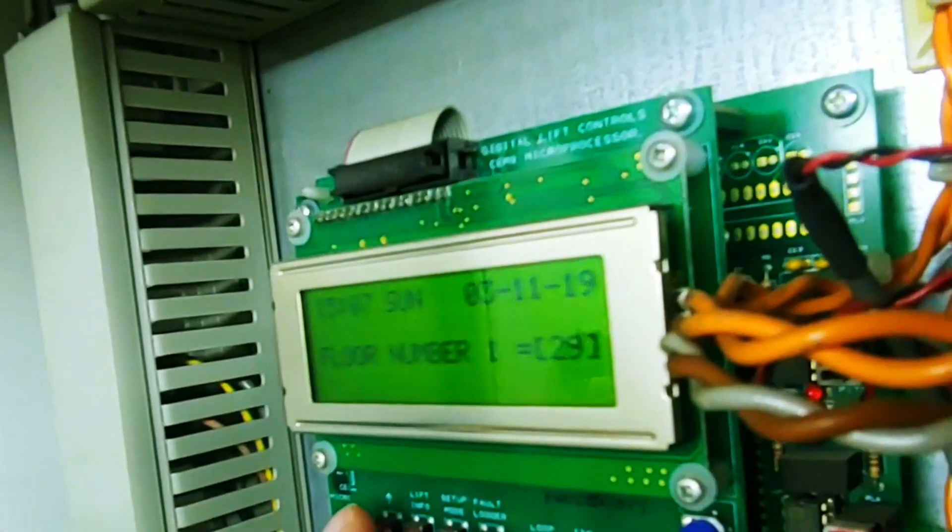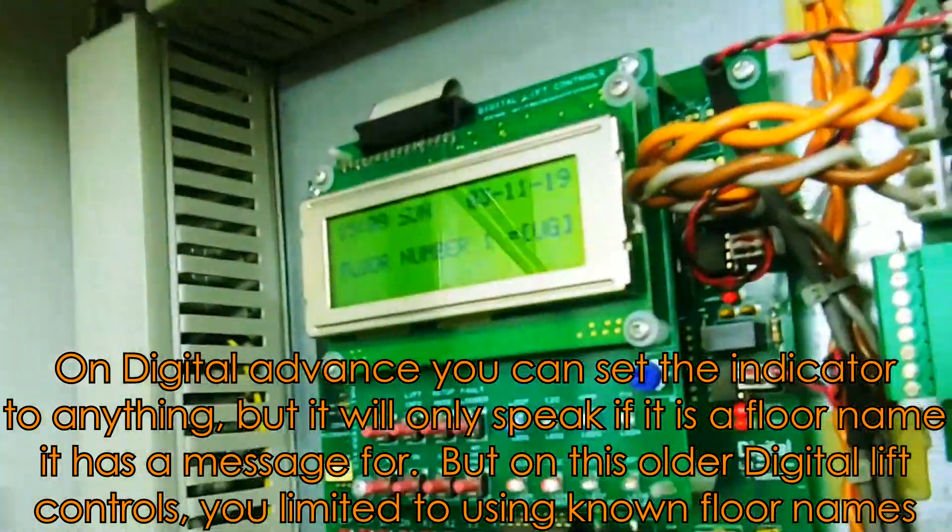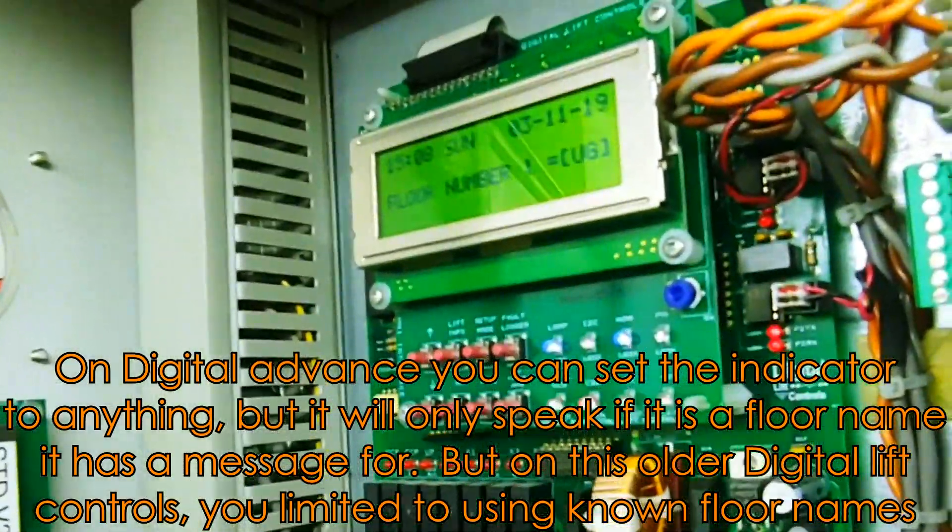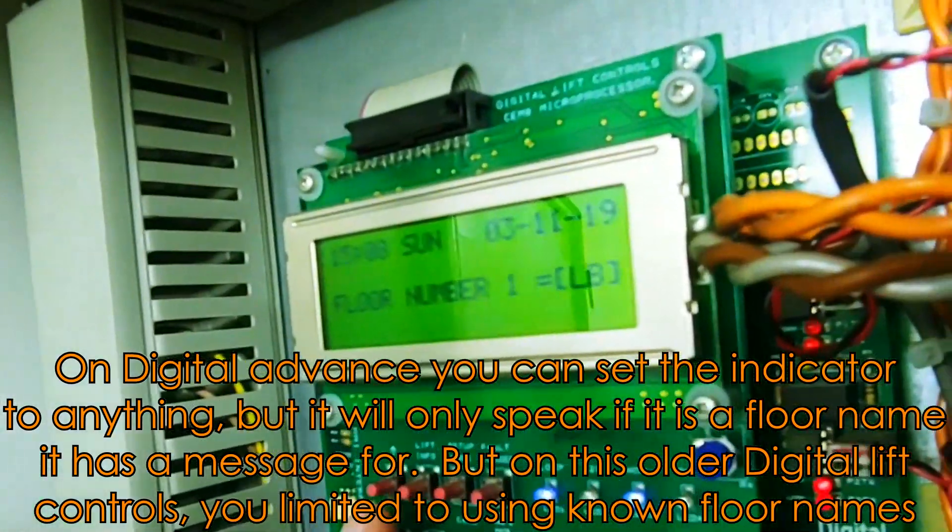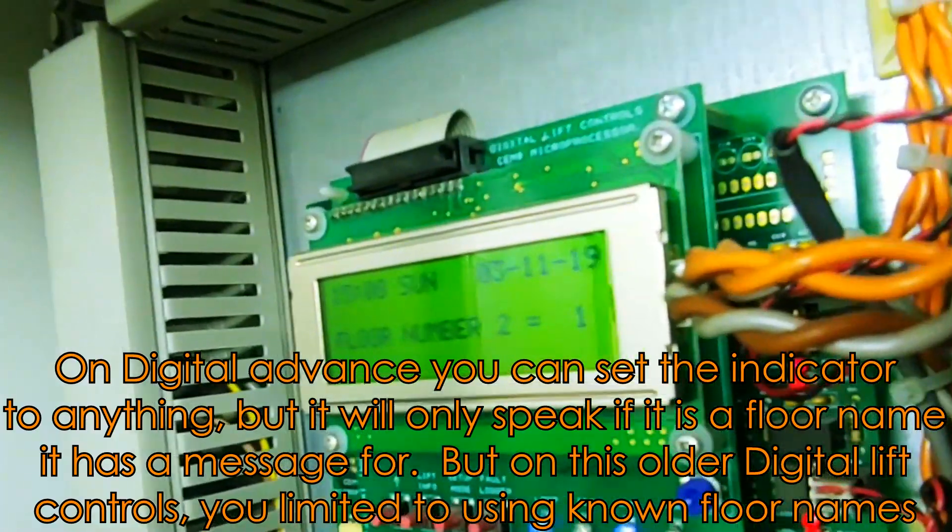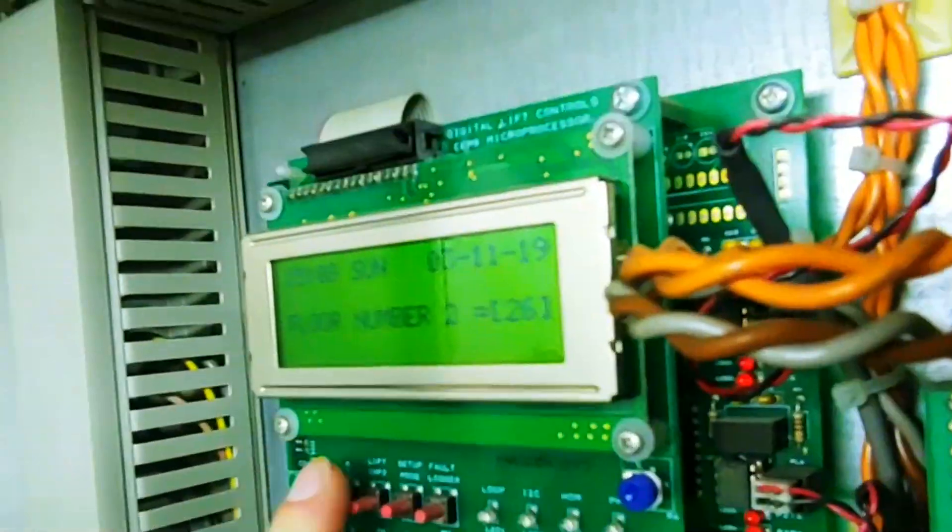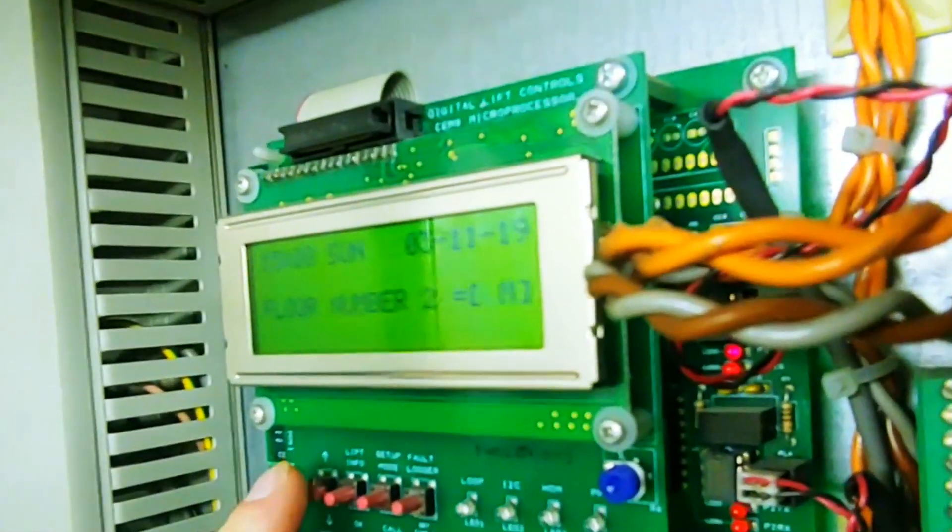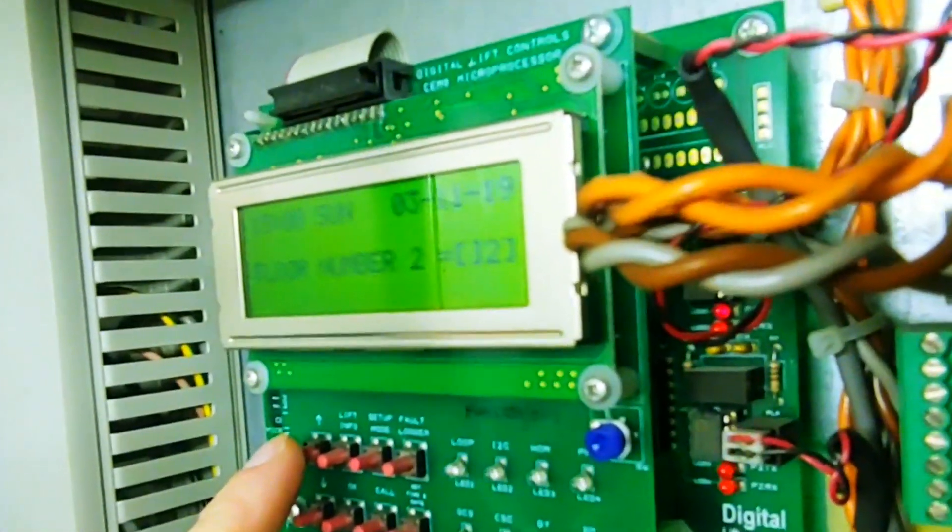An interesting thing is on Digital Advanced, the logic that superseded this logic, you can set the indicator to anything you like, but the voice will only speak if you set it to something it's got a message for. If you set it to ZZ, it'll say nothing. But if you set it to UG, it'll be upper ground. On this older digital lift controls logic, you can only set the indicator to set messages where there's a link to a voice message it can say. There's very little options of what you can set the indicator to.